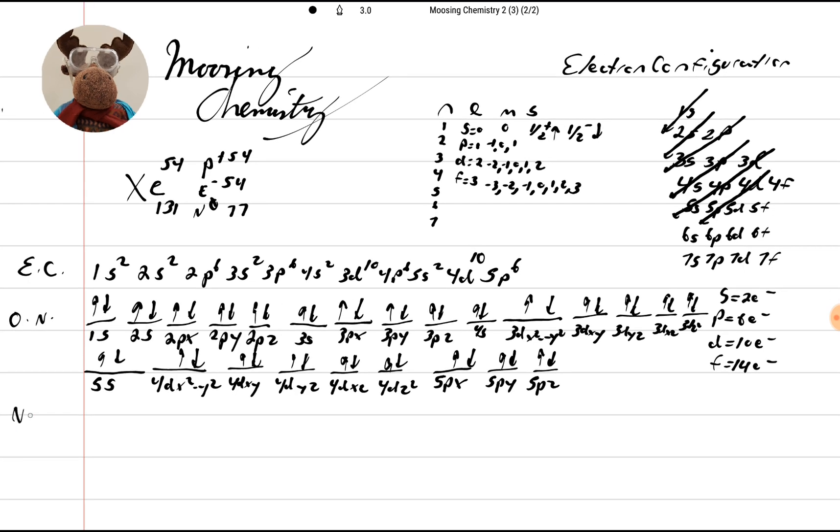Okay, now our noble gas notation, which is next. Okay, our NGN. So Xenon's noble gas notation is this. It takes care of all that. So we would just simply write XE in there and close the bracket.